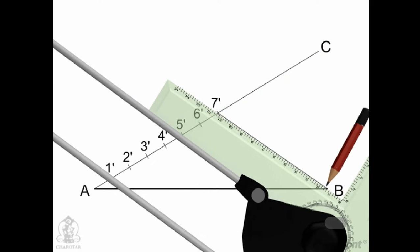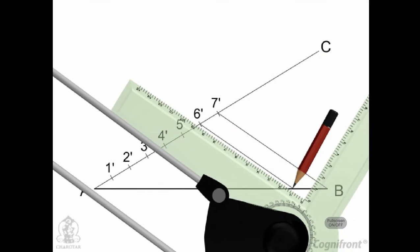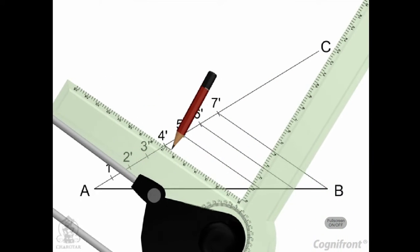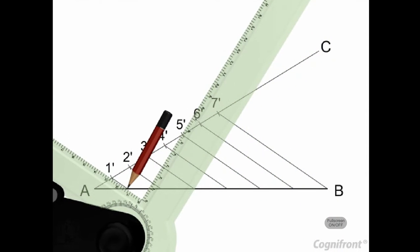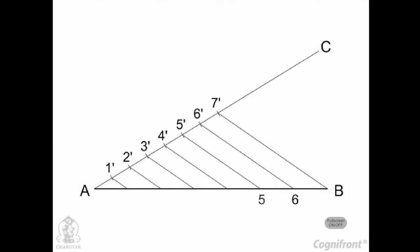with point B of the line AB and draw lines parallel to 7-B cutting the line AB at 6, 5, 4, 3, 2, and 1 respectively. Now, observe the line AB has been divided into 7 equal parts.